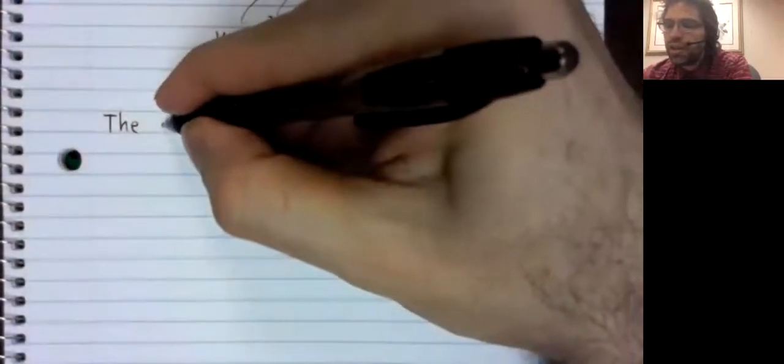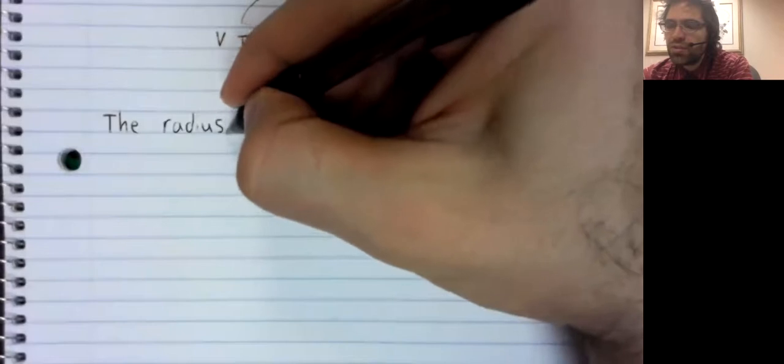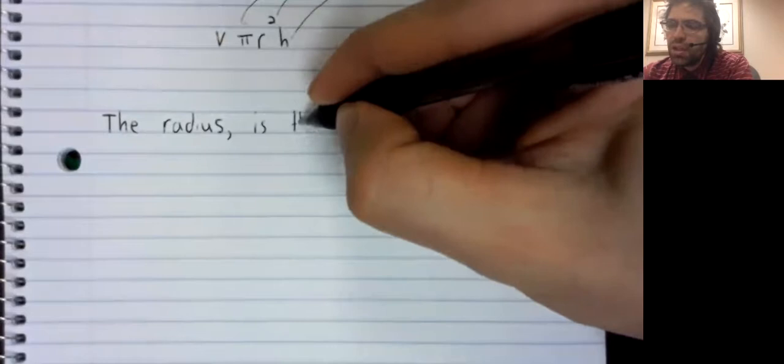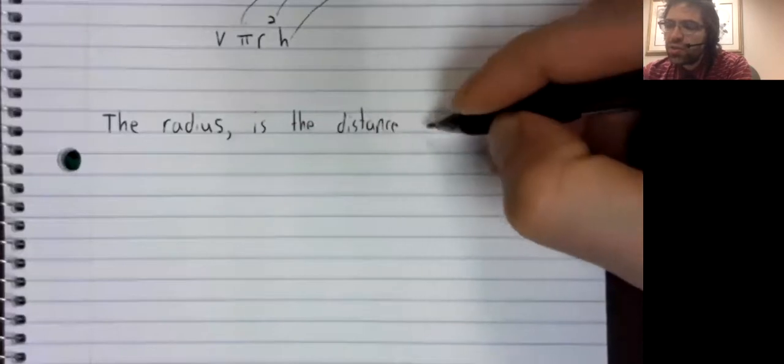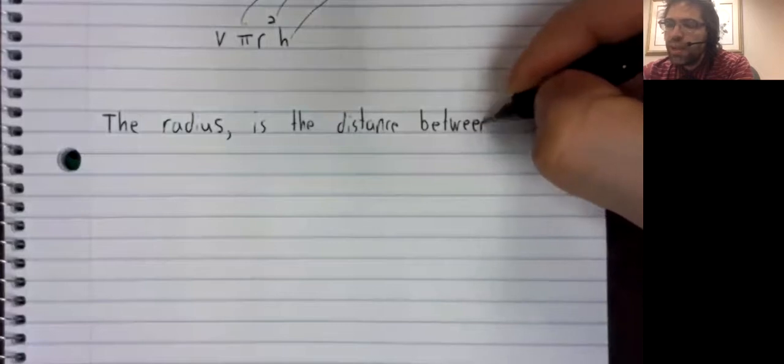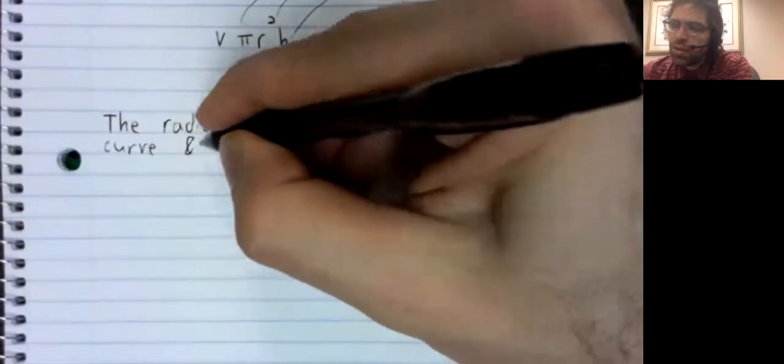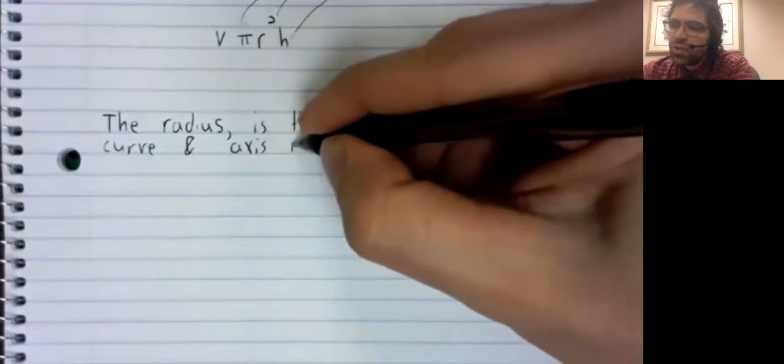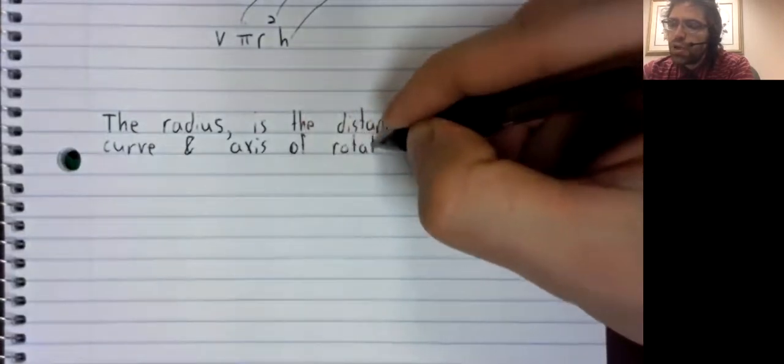So, in this context, when we talk about the radius, we mean the distance between the curve and the axis of rotation.